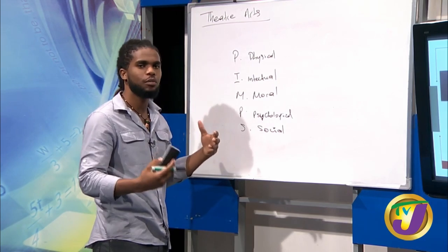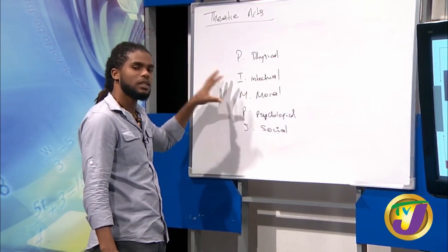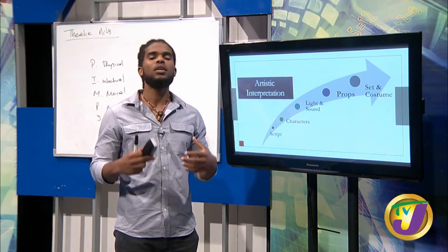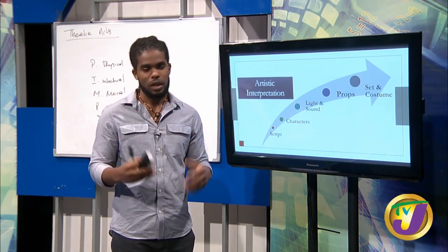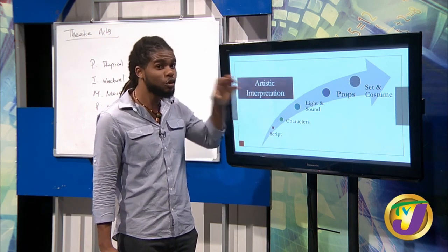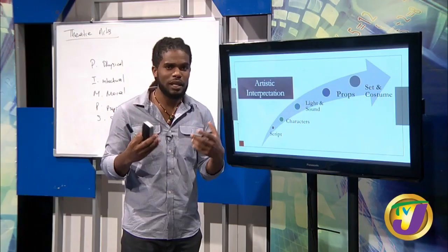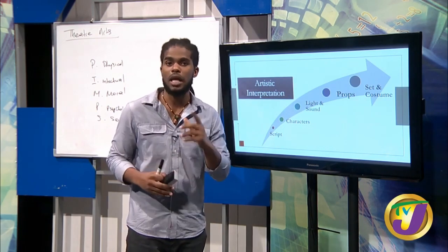It's very important that you understand PIMPS. The director has to know it and the actors have to know it, because it's a relationship — teamwork in creating the production. Everybody has to be on the same page. The artistic interpretation also covers light and sound, the props used by actors, and the set and costumes. When you go to a play as a member of the audience, you want to see something that looks really good — and the team has to ensure that before you get there.